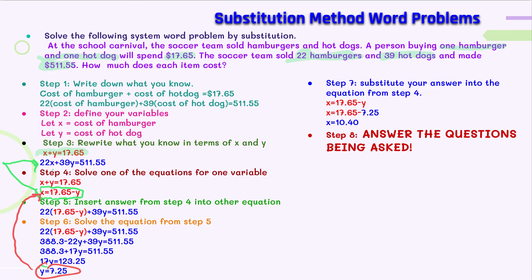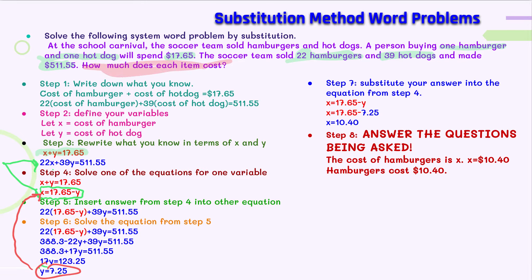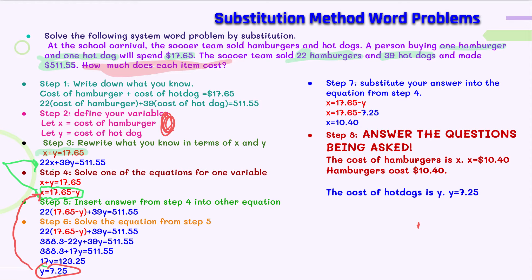Step eight: answer the question being asked, which is how much does each item cost? The cost of a hamburger is X, and X equals $10.40, so hamburgers cost $10.40. The cost of hot dogs is Y, and Y equals $7.25, so hot dogs cost $7.25.